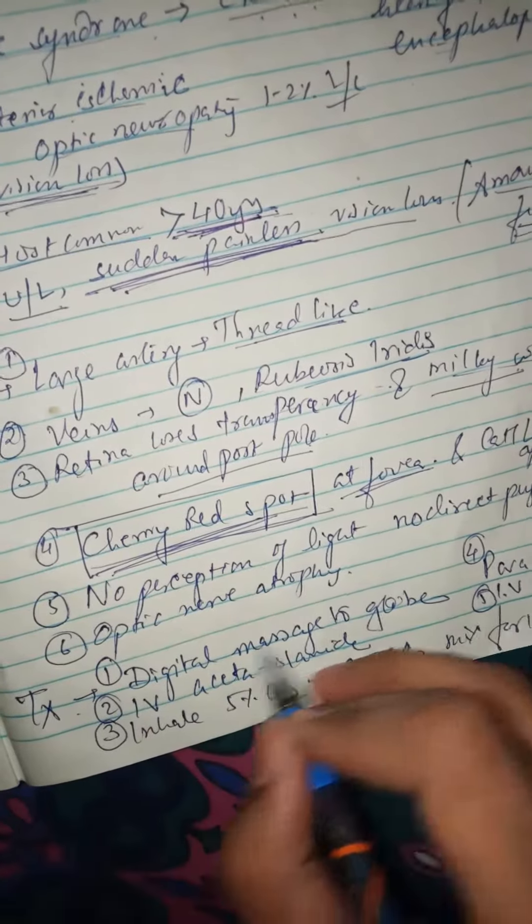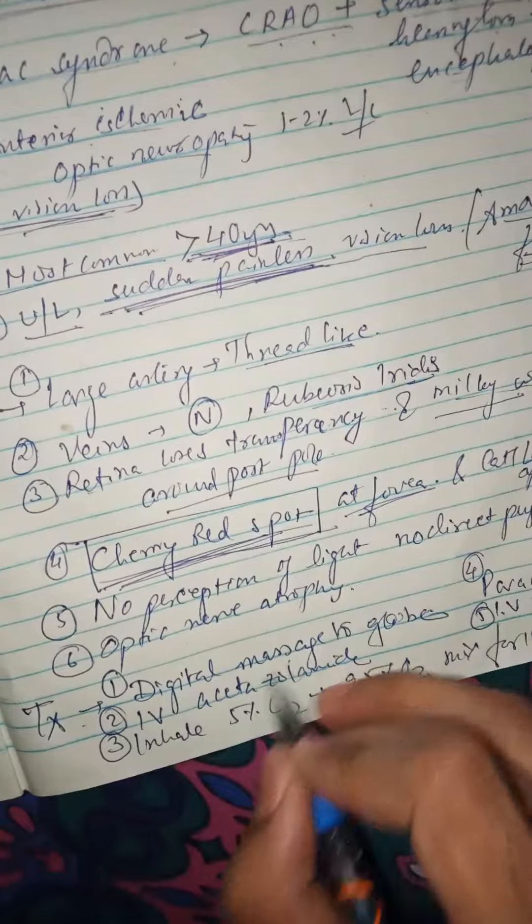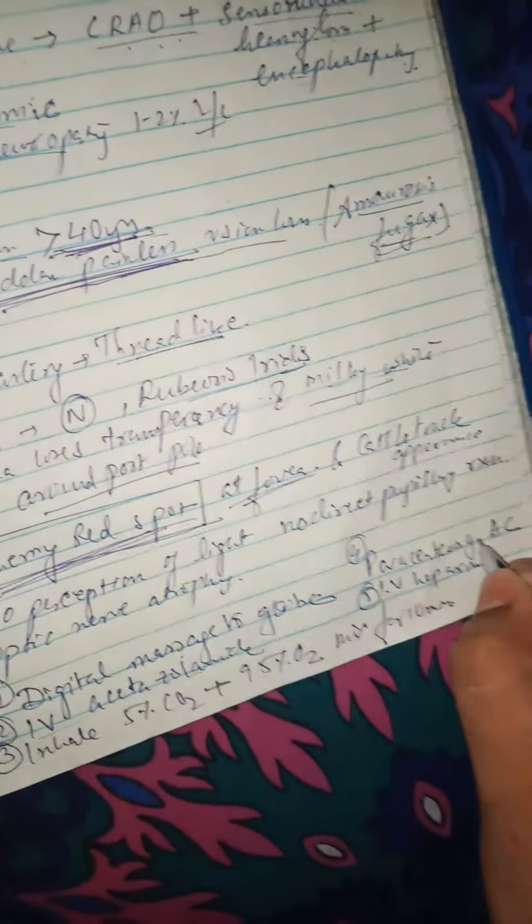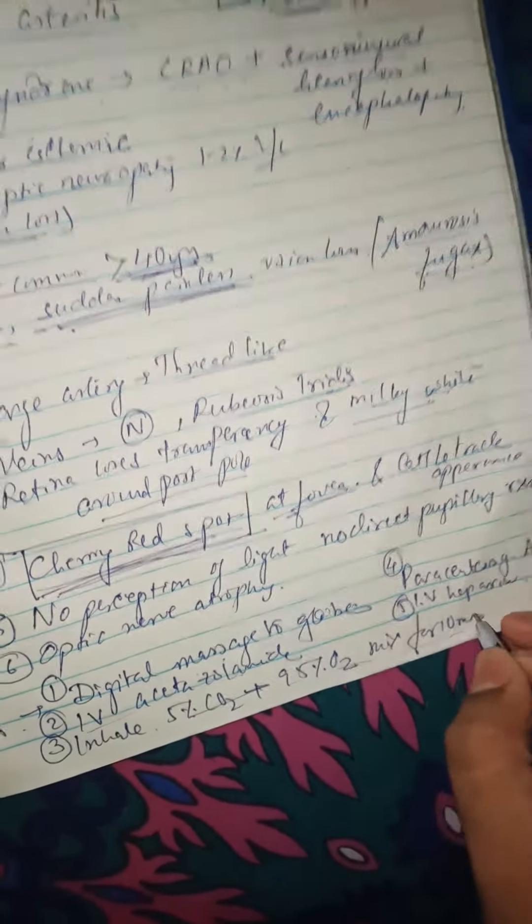So what is the treatment? Digital massage to the globe immediately—you have to give digital massage immediately. IV Acetazolamide, IV Heparin, paracentesis of the anterior chamber, inhalation of 5% CO2 and 95% oxygen mixture.